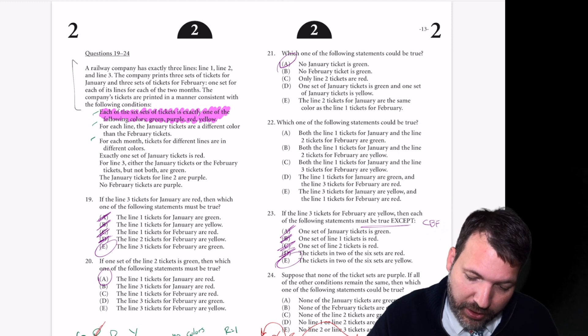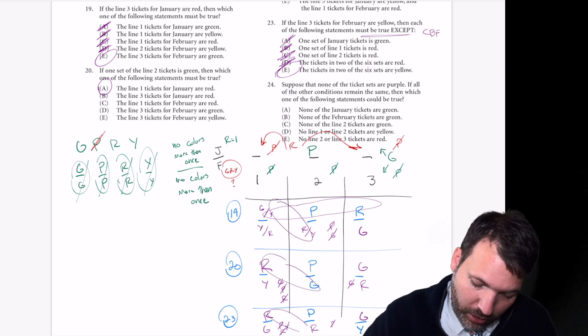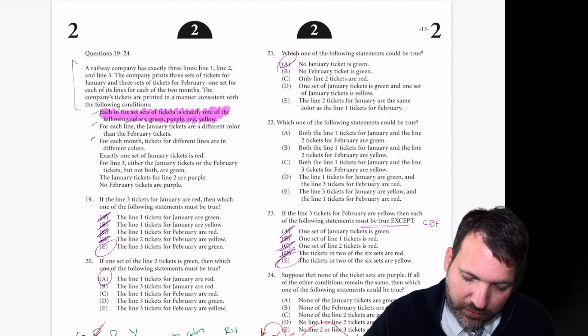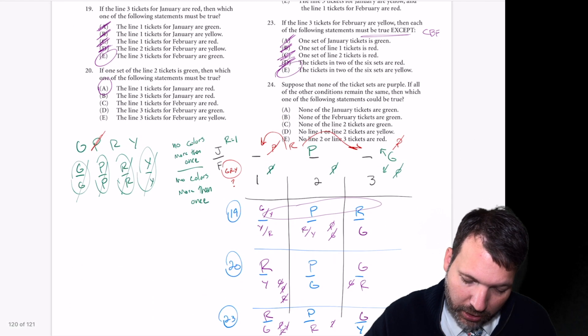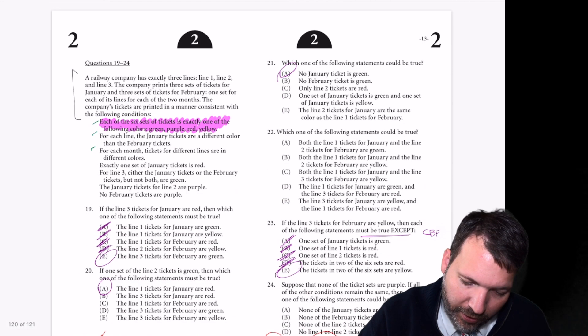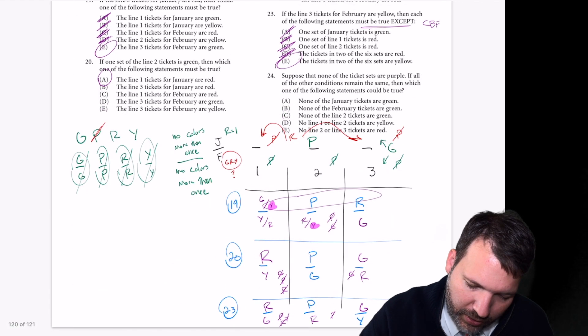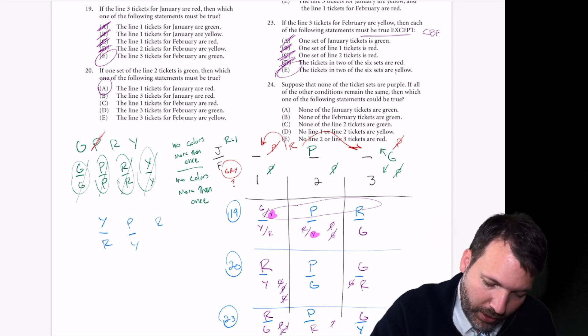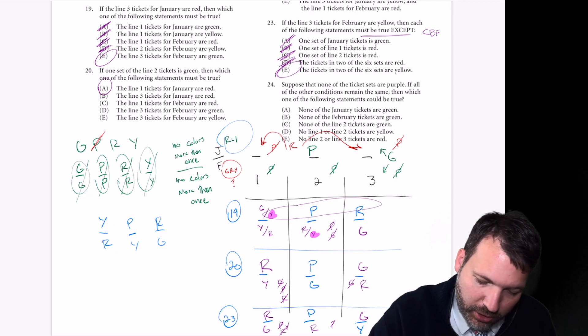Number 22, which one of the following statements could be true? Again, we'll either use previous situations or our deductions. Both the line 1 tickets for January and the line 2 tickets for February are green. We haven't seen it. That doesn't mean it's impossible, so I'm not going to cross it off. Both the line 1 tickets for January and the line 2 tickets for February are yellow. Now, that was possible. Specifically, right here, I think we had line 1 in January yellow and line 2 in February also yellow, so that should be correct. Let's jot that down just to make sure. Can we do yellow? That would have had to be red in that case. Purple and yellow. Red and green. Red we've used at least once. Purple's in the right position. Green we've used at least once. I'm not seeing any problems with that. I'm pretty sure that's the answer.